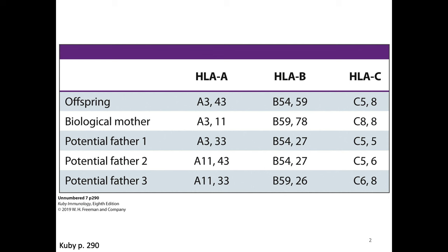One other important thing: MHC genes tend to be inherited together. So from this scenario, we know that in the offspring, A3, B59, and C8 are on the same piece of DNA - the piece that came from mom's chromosome 6. And we know that A43, B54, and C5 are also on the same piece of DNA. We refer to these as the two haplotypes of the offspring.